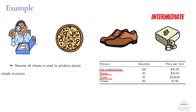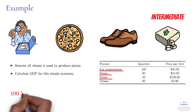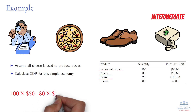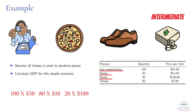Because market value equals quantity produced multiplied by price per unit, we multiply the numbers under the quantity column by the numbers under the price per unit column. Finally, we add up the market values of eye examinations, pizzas, and shoes, which gives us $7,800 GDP for this example economy.